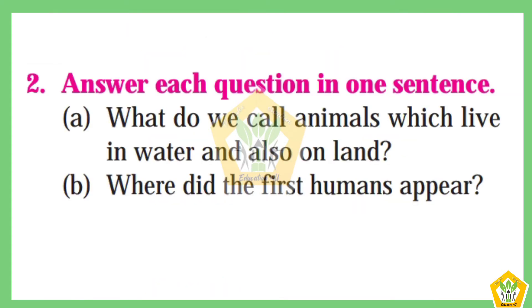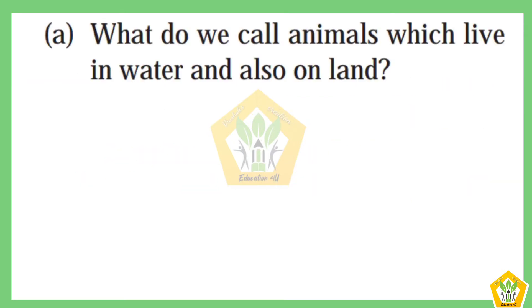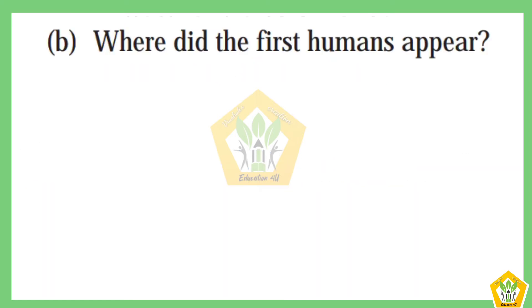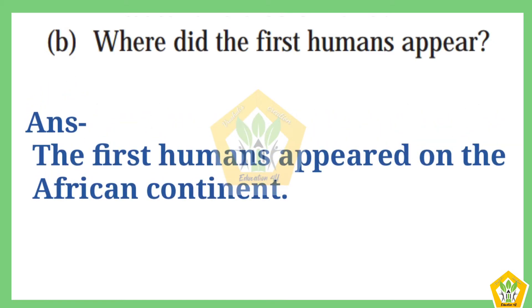Question number two: Answer each question in one sentence. A) What do we call animals which live in water and also on land? The answer is: the animals which live in water and also on the land are called amphibians. B) Where did the first humans appear? The answer is: the first humans appeared on the African continent.